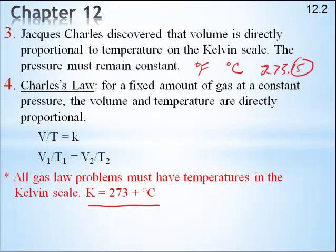So, let's try a problem here. Oh, actually, you know what? I'm getting ahead of myself. So, what Charles did is if the pressure was constant, he found the volume and the temperature are directly proportionate.